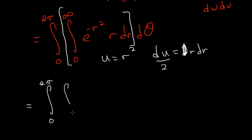So now our integral becomes the integral from 0 to 2 pi and the integral from 0 to infinity of e to the minus u times du over 2. And I'll just put that one half outside.